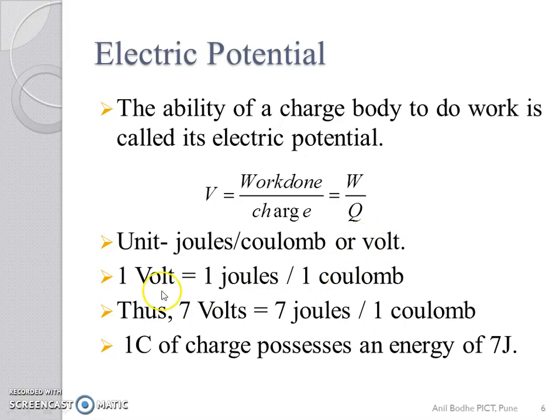What is 1 Volt? A body is said to have an electric potential of 1 Volt if 1 Joule of work is done to give it a charge of 1 Coulomb.